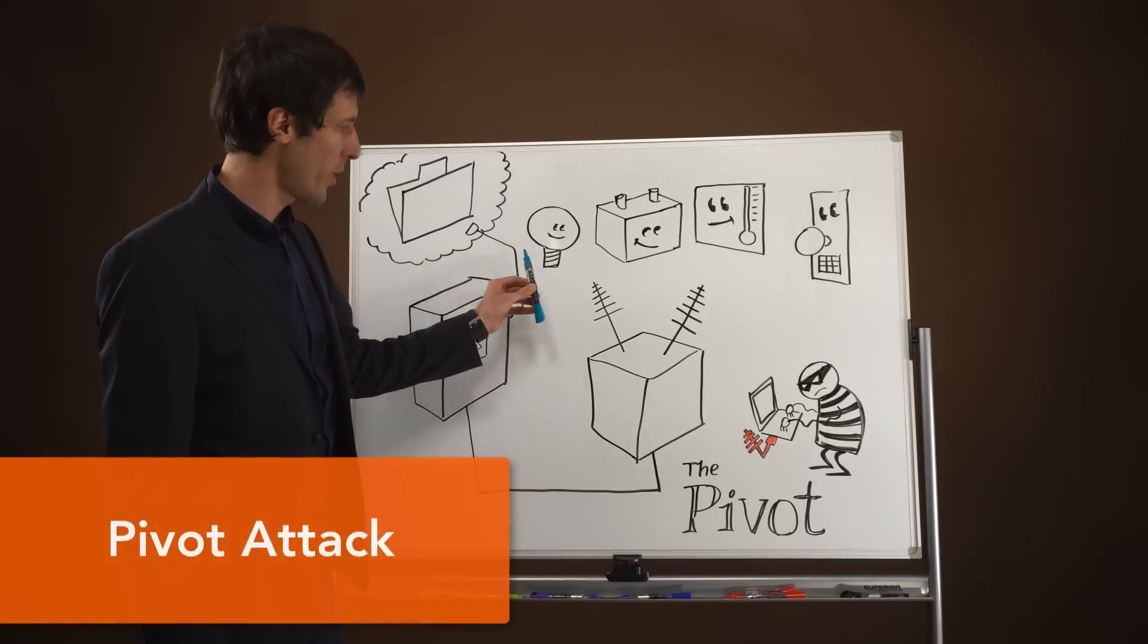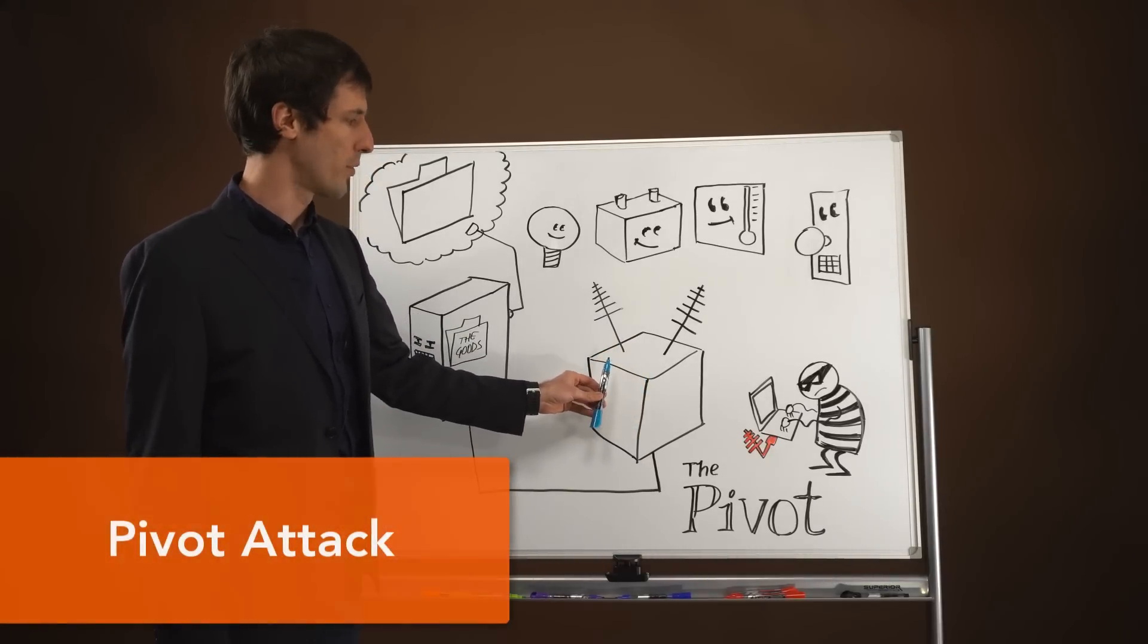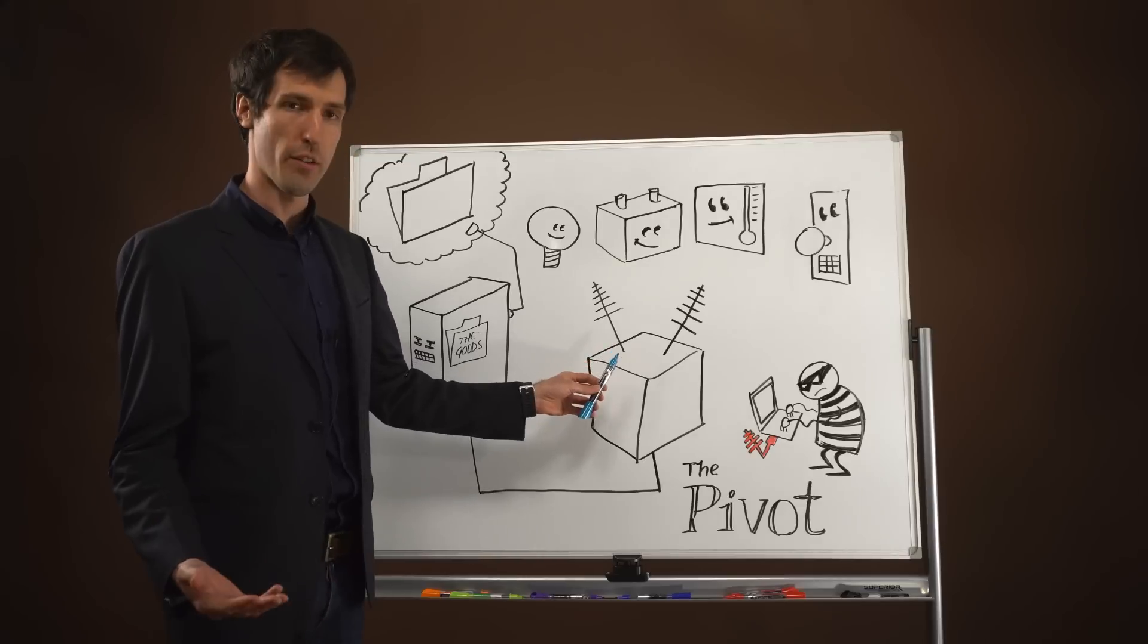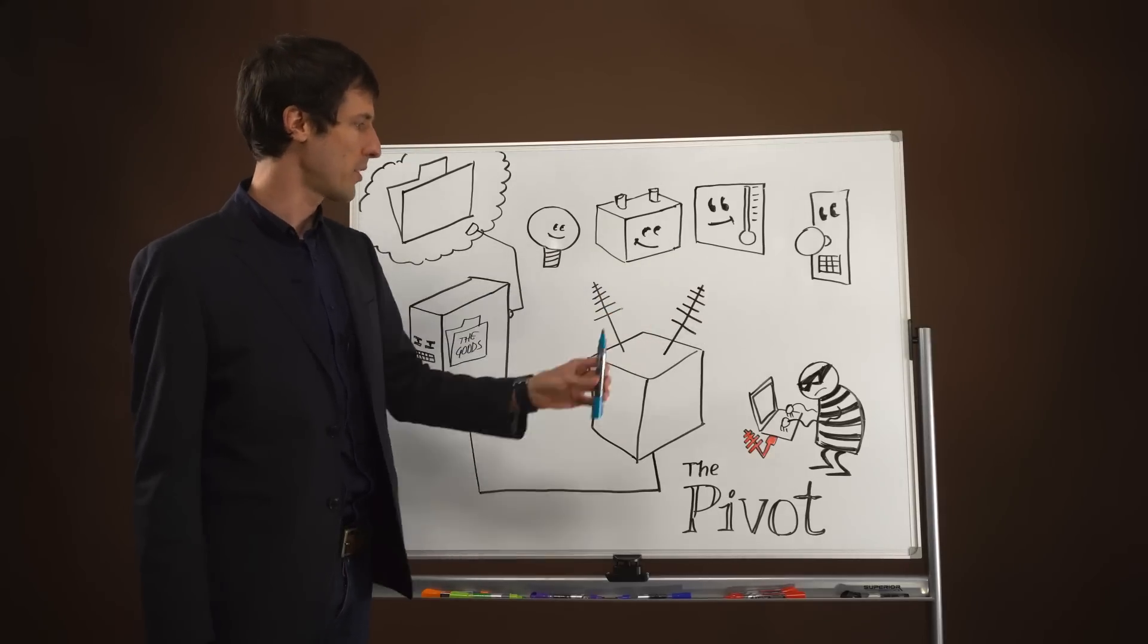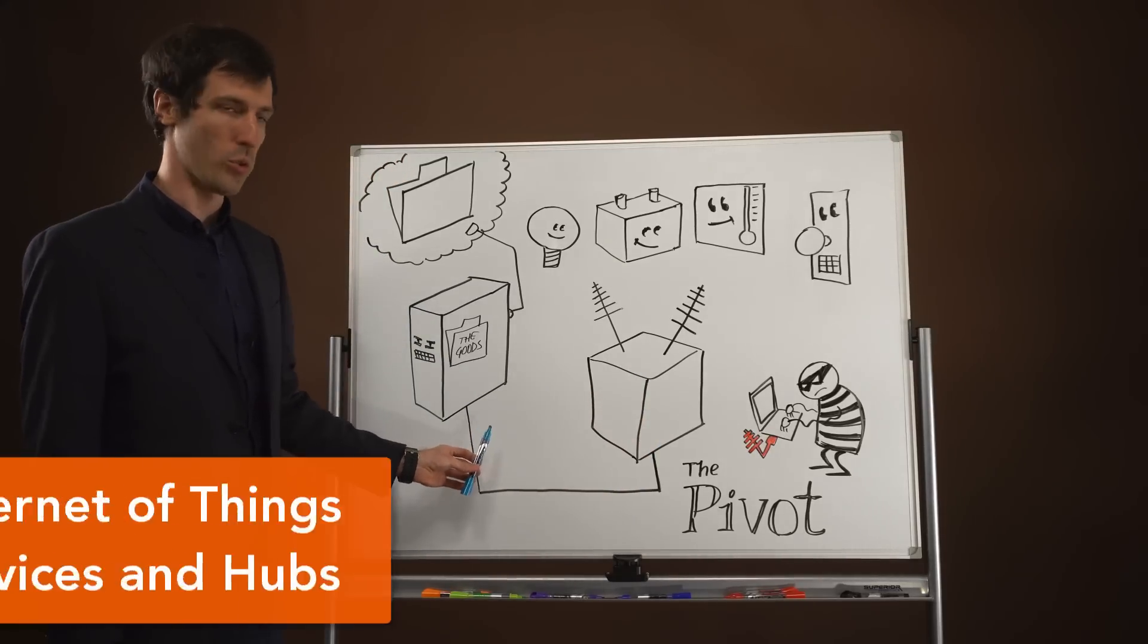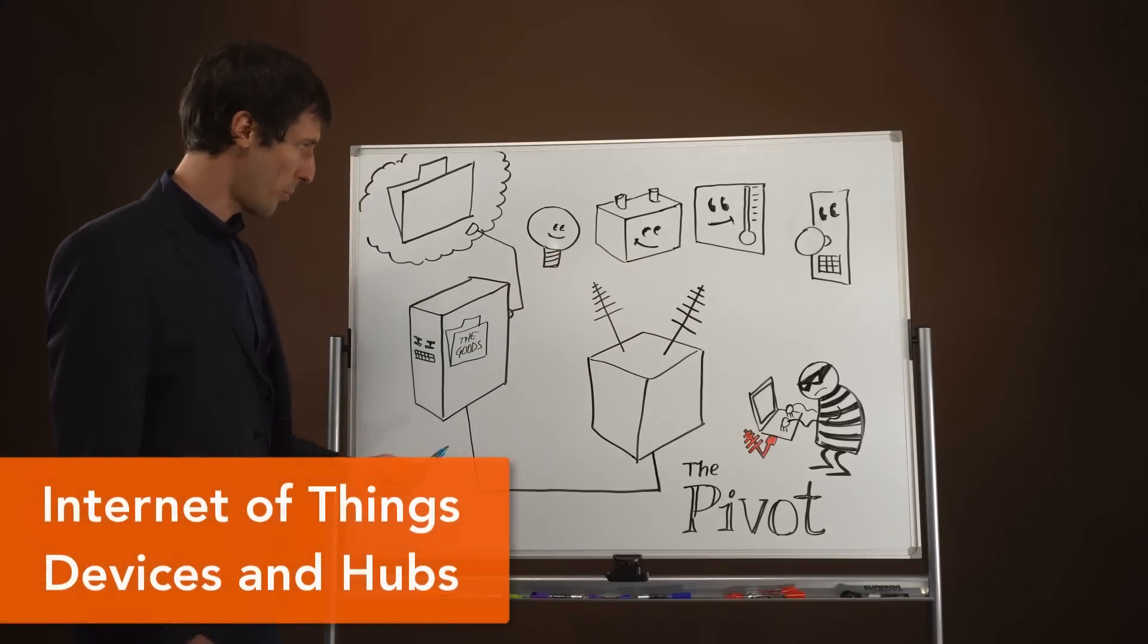In this scenario, we have a central controller or hub that is capable of communicating in a number of different RF protocols with different devices, and that hub is then connected into a central network. If you imagine this within a corporation in a modern office building,